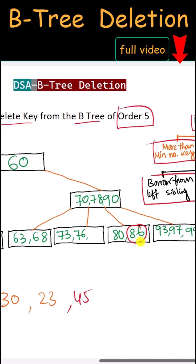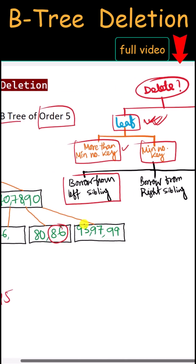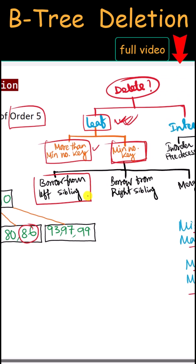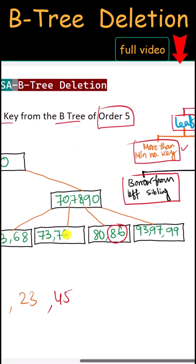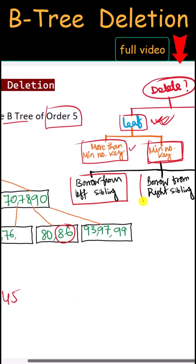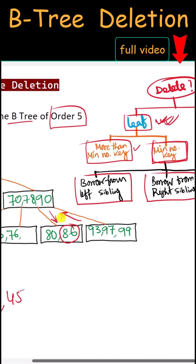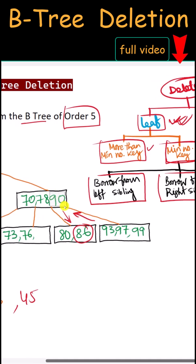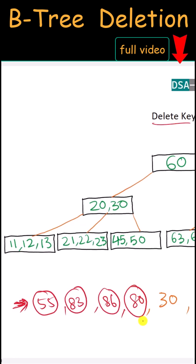Next we have 86. This node is a leaf node with the minimum number of keys. We have to borrow from the left sibling, but the left sibling also has the minimum number of keys, so we cannot borrow from there. We borrow from the right sibling through the parent node: key 90 comes down and key 93 is borrowed from the right sibling, and then we delete 86.